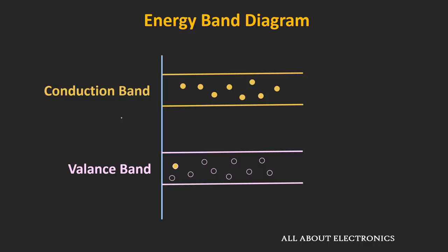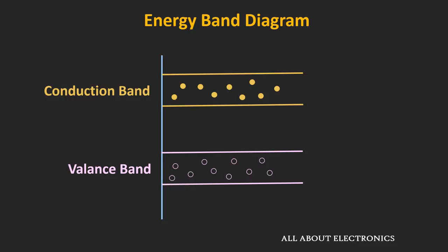As you know, whenever the electron jumps from the higher to the lower energy level, then it releases the energy in some form. So in the normal P-N junction diode, this energy is released in the form of heat, because in the fabrication of this P-N junction diode, different semiconductor materials like silicon and germanium are used. And in these materials, during the recombination of holes and electrons, the energy is released in the form of heat.